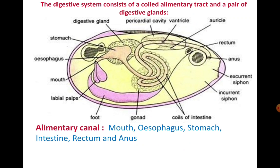When we talk about the digestive system, it mainly consists of the alimentary canal and the glands which assist in the process of digestion. So here also with respect to Unio, the digestive system we will study under two main headings. First we will learn about the alimentary canal — what all parts it contains and what happens in every region. Followed by the digestive glands — what are they, where are they present, and what is their role in digestion.